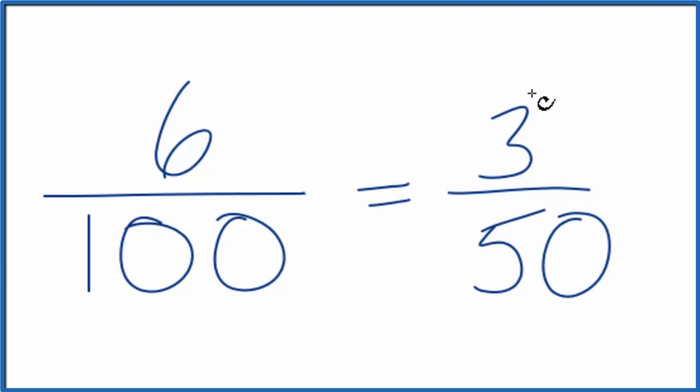We really can't simplify or reduce this any further. There's no common factor that goes into both 3 and 50 and gives us a whole number. So that's how you simplify 6 over 100.